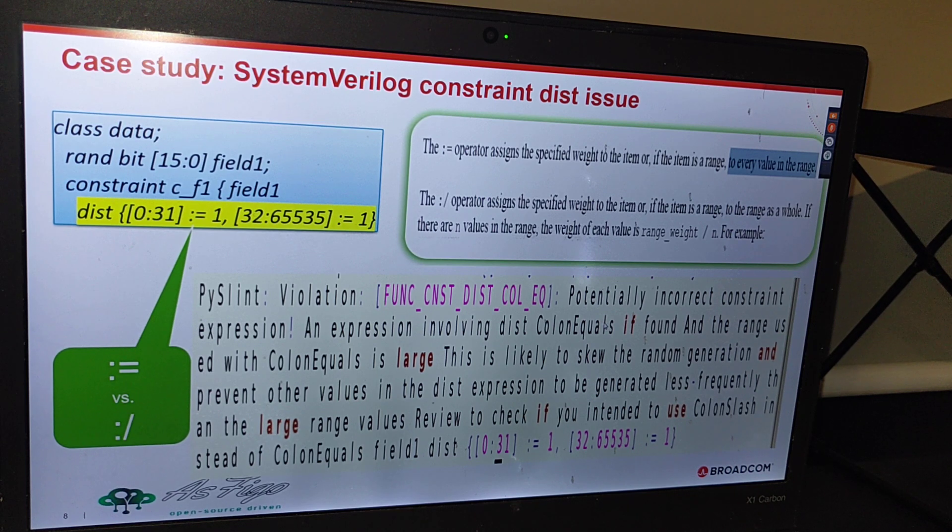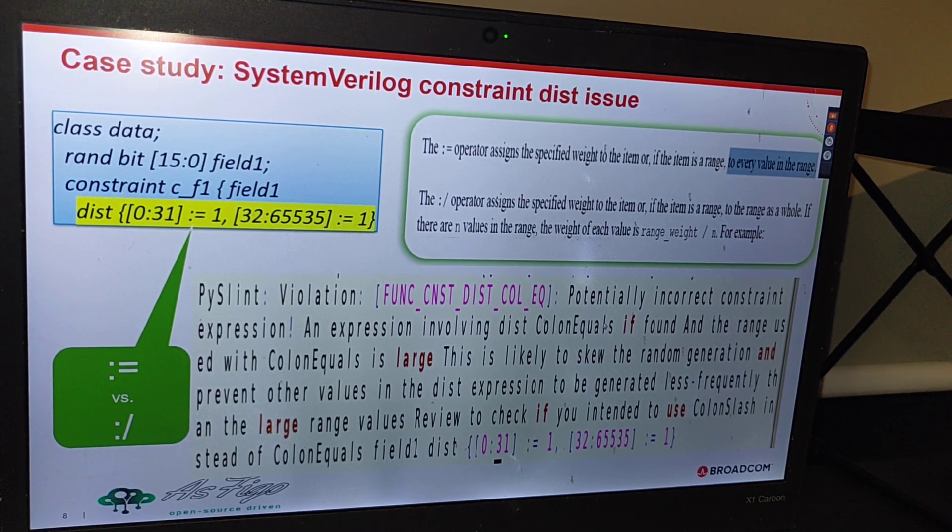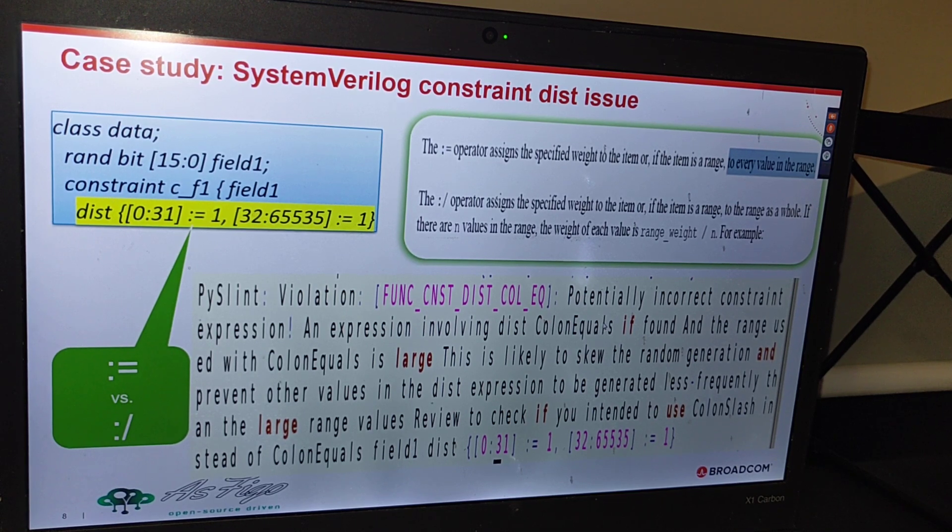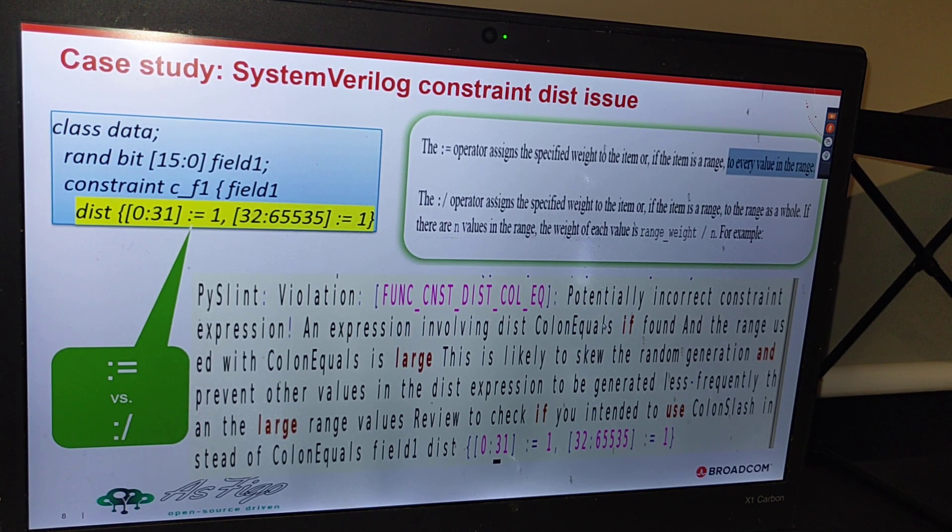It can pop up at compile time. You don't need to wait till your code coverage or functional coverage and come across this and go back and fix your transaction. At compile time the violation will pop up and you can fix this. This is one of the main advantages.